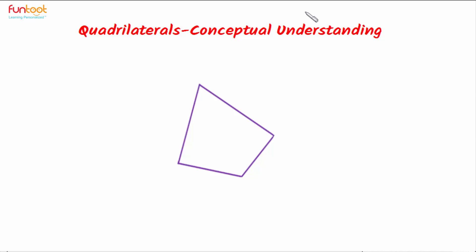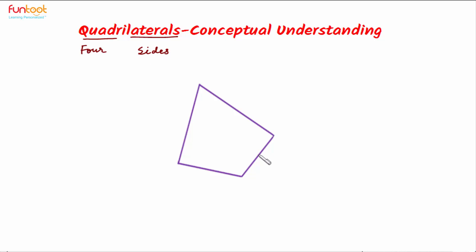In this video we will learn about quadrilaterals. First of all, we should know the meaning of the word quadrilateral. 'Quad' means four and 'lateral' means sides, so a quadrilateral is a figure which has exactly four sides.